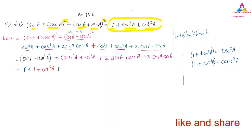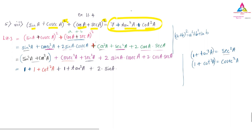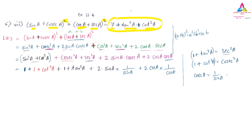For sec²A, we use: sec²A = 1 + tan²A, so I write 1 + tan²A. For the cross terms: cosec A = 1/sin A, so 2·sin A·cosec A becomes 2·sin A·(1/sin A). Similarly, sec A = 1/cos A, so 2·cos A·sec A becomes 2·cos A·(1/cos A).